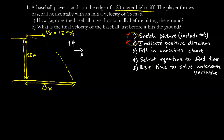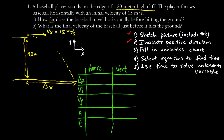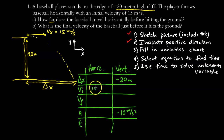Step three is to fill in the variables chart. Vertically, the object went down 20 meters. Since up is positive, the vertical displacement is negative 20 meters. The vertical acceleration is negative 10 meters per second squared. Horizontally, the velocity is 15 meters per second — both initial and final horizontal velocities are always the same because the object moves at constant horizontal velocity, meaning horizontal acceleration is zero.